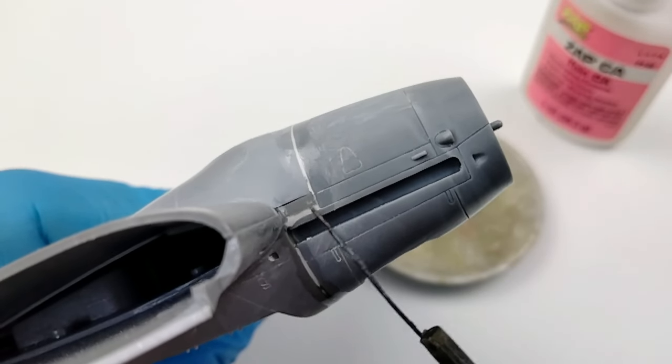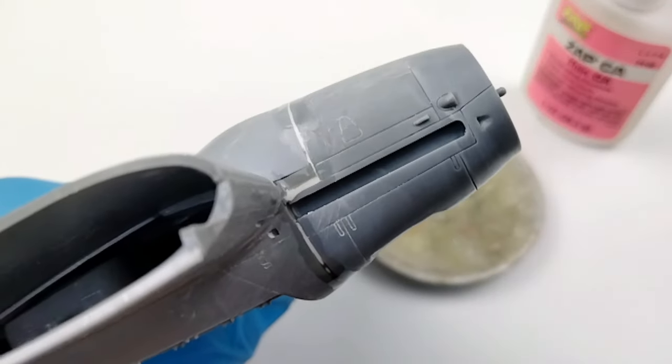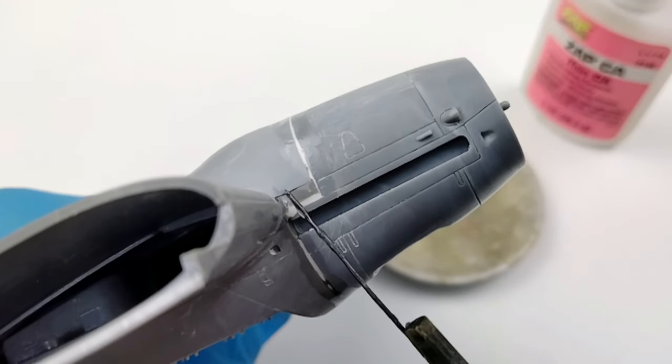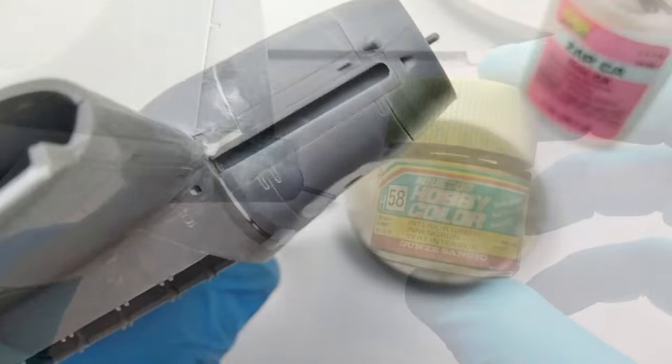This is a great two-step method of filling the majority of the gap with Perfect Plastic Putty, shaping it and allowing it to dry and fill into the gap, and then applying a CA glue over it to give it a surface that is sandable and rescribable.